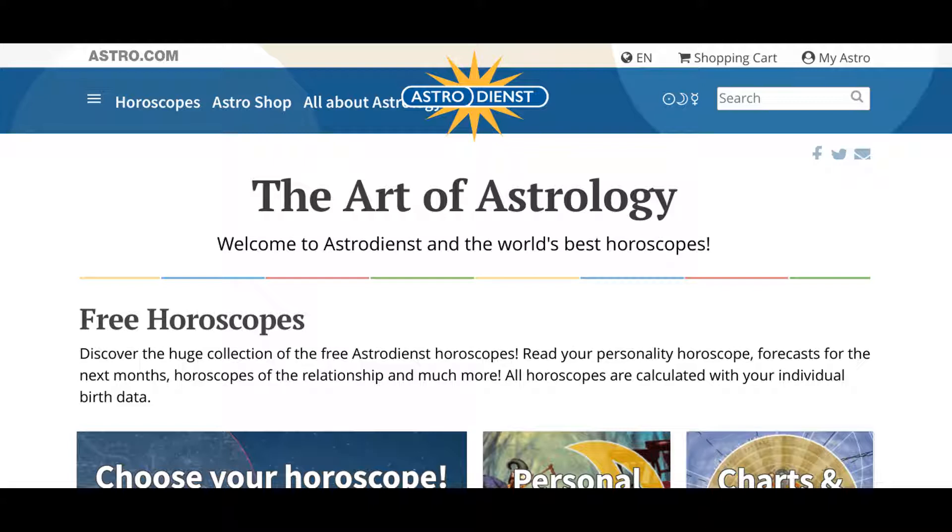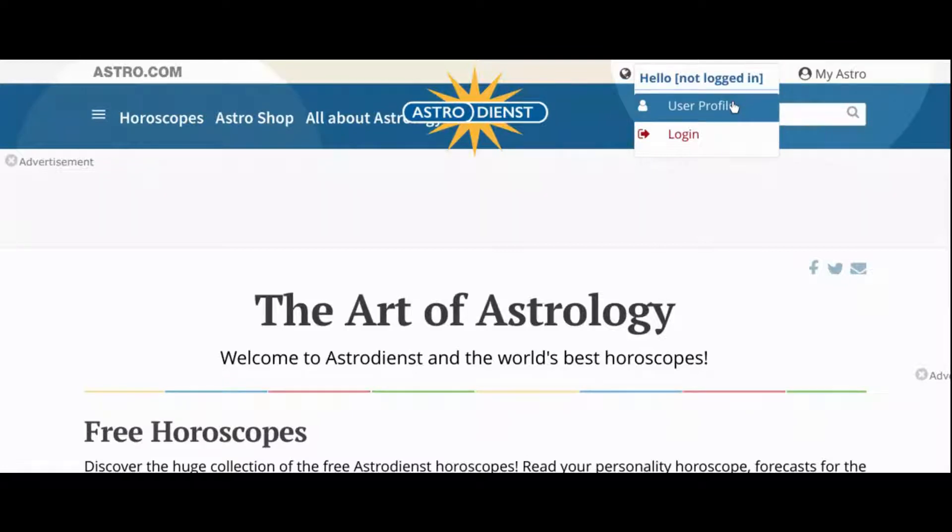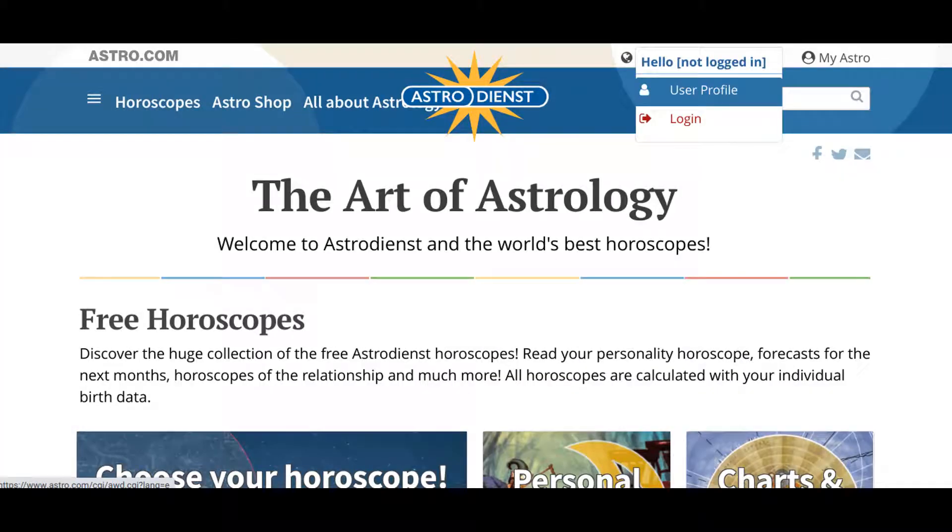Okay, so first you go to astro.com. This is what it looks like currently on a desktop or laptop computer. In the upper right corner you can see it says My Astro. When you click on that, it'll give the options User Profile or Login. Login is for if you have an account. With an account you can save charts. User Profile takes you right to creating a chart, and you can create an account if you want one.